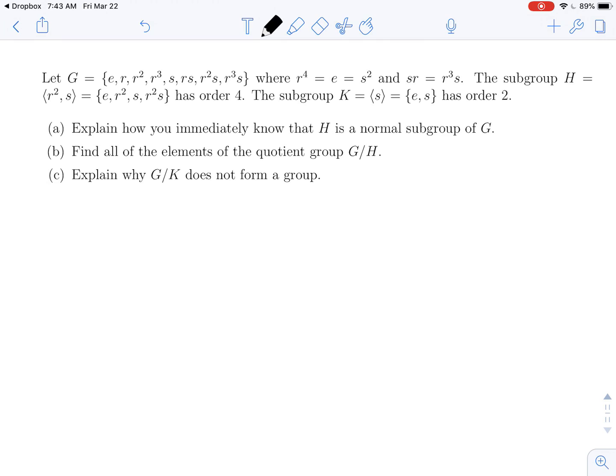Welcome back. In this video, we've been given a group G which consists of eight elements: E, R, R squared, R cubed, and you have this element S, and then products of S with the R's.